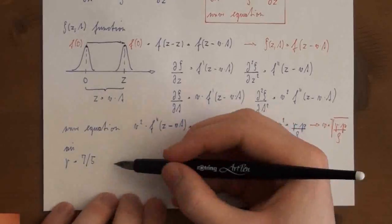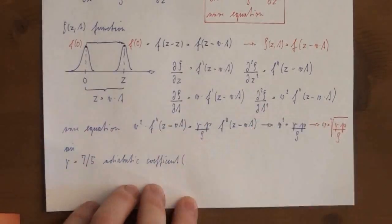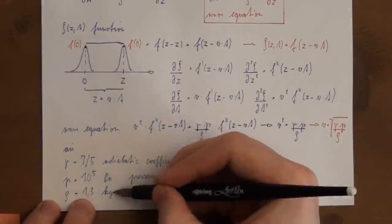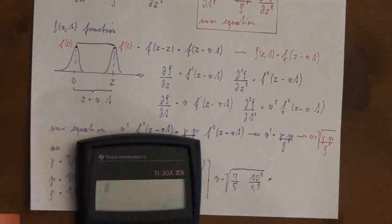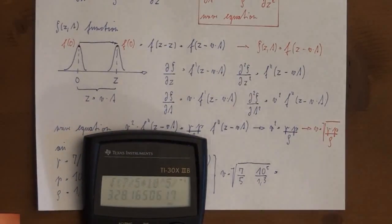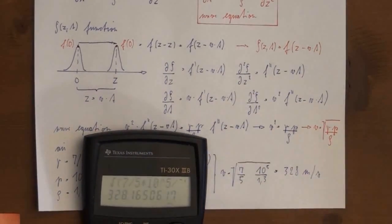The adiabatic exponent for air is 7 over 5. The pressure at sea level is about 10 to the power of 5 pascal and the density is 1.3 kg per cubic meter. Type that into a calculator and we get 328 meters per second, which is the speed of sound.